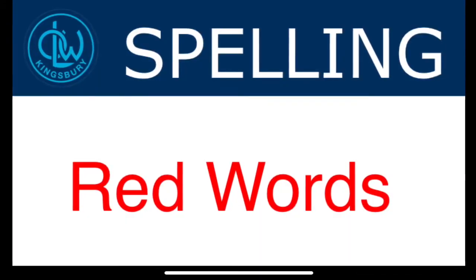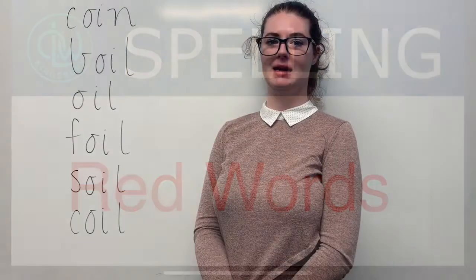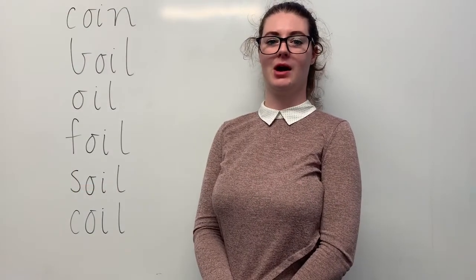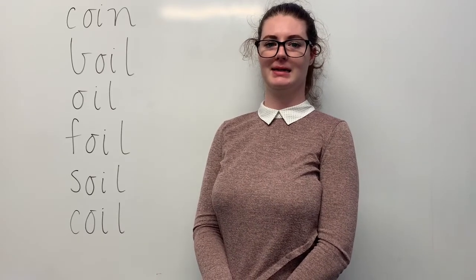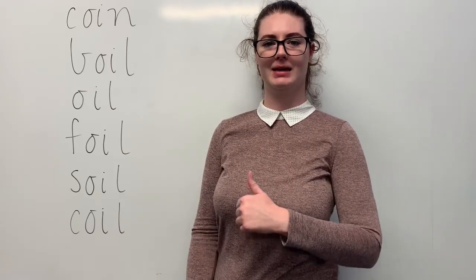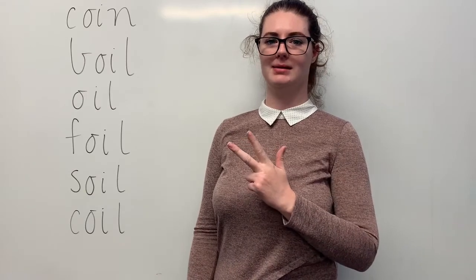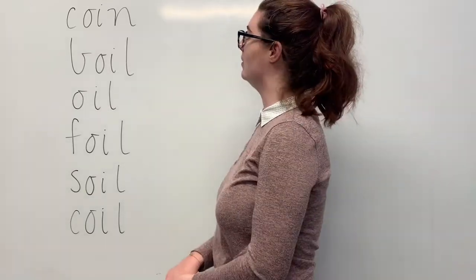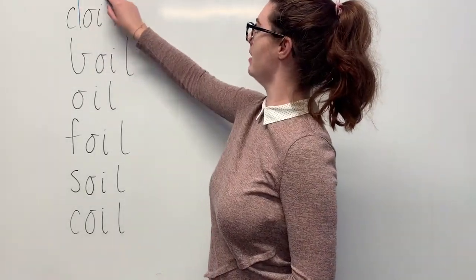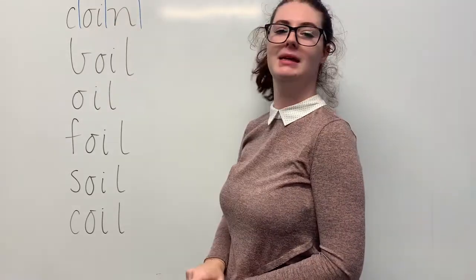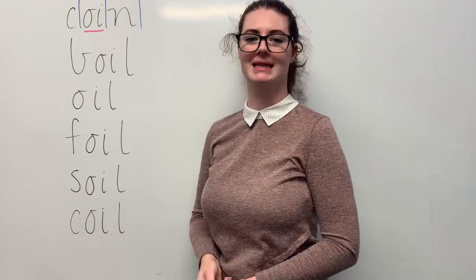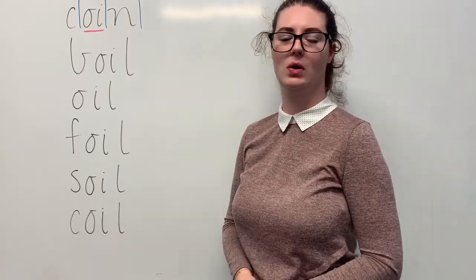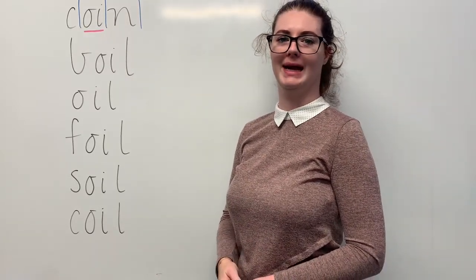These are our red words. Say coin. When I went for a walk, I found a 50 cent coin. The sounds in coin are, together, k, oi, n. The letters in coin are c, oi, n. The part we need to remember is the oi digraph making the oi sound. Can you teach it to me? Coin: c, oi, n.